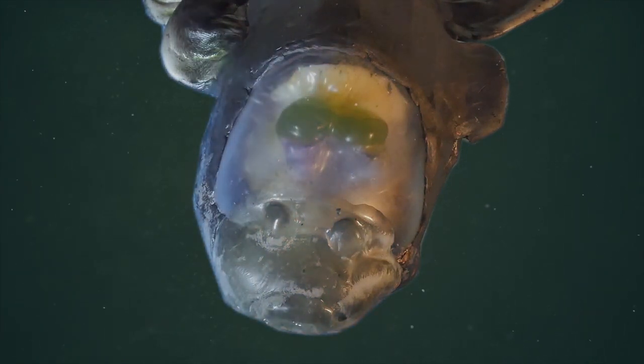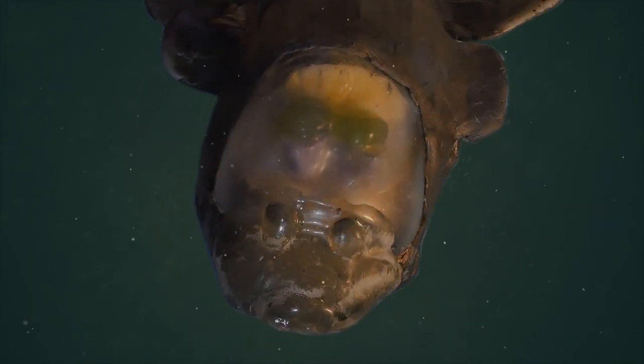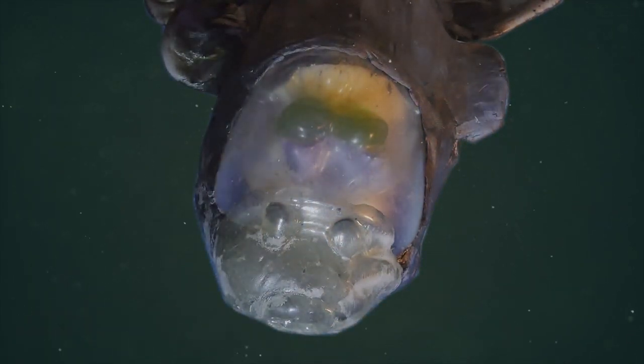Inside that jelly head, there are two tubes, and those tubes are usually looking upwards towards the surface. They have yellow or green filters in them, which takes out a lot of the downwelling light. And why would you want to do that? To better see the bioluminescence is the answer.